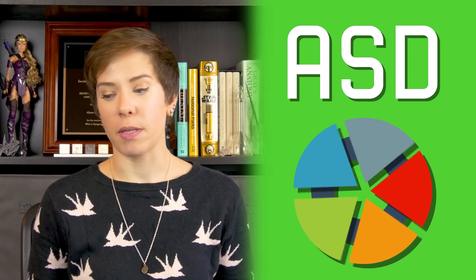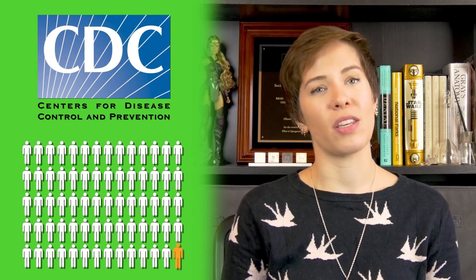It's actually now called Autism Spectrum Disorder, or ASD, to encompass the broad span of symptoms and severity. And it affects a lot of people. In 2016, the CDC released a report that nearly 1 in 70 kids in the U.S. is autistic.